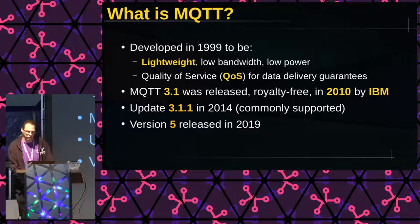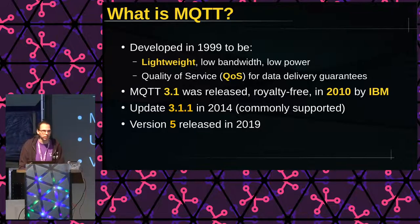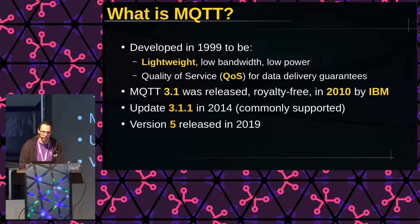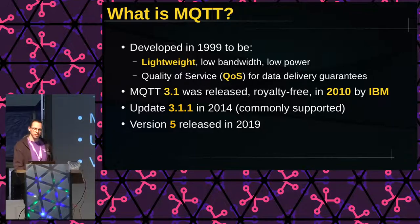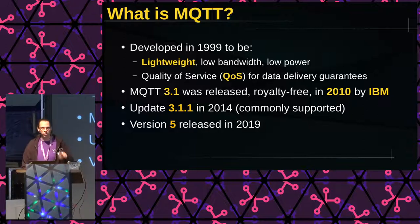That was when we were first introduced to it, and it slowly became part of the standard IoT and home automation suite. In 2014, we had a little update with version 3.1.1, and that is the one we usually see supported in our devices and libraries, if not version 5 that was released in 2019. Version 4 does not exist — or at least it kind of does, because in the header of the packet they used version 4 when using 3.1.1, and that's why they skipped to version 5.